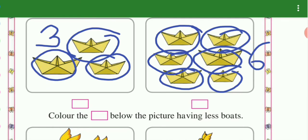Less and more. How many children are there? 3 is the number. More — how many children are there? 6 and 3. Below the picture giving less boat. When it says less boat, we must color the one with more.